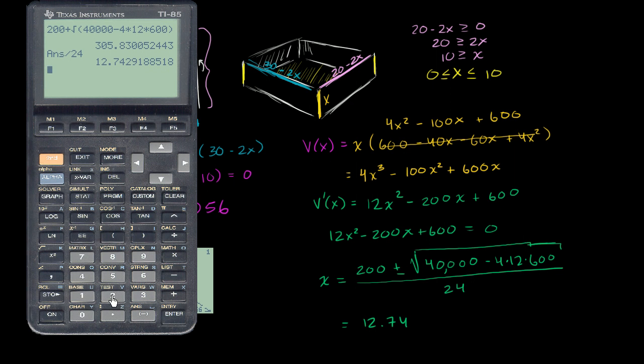So now let me do 200 minus the square root of 40,000 minus 4 times 12 times 600. That's just the numerator. And then I'm going to divide that by 24, and I get 3.92.